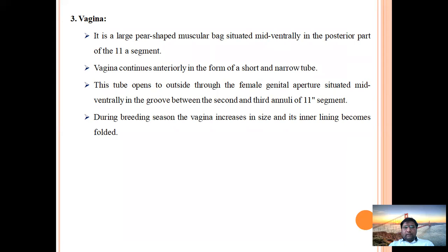The female reproductive organs open outside the body through a female genital aperture situated between the second and third annuli of the eleventh segment.